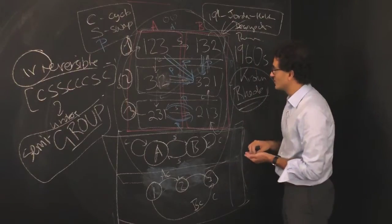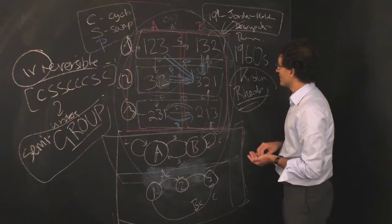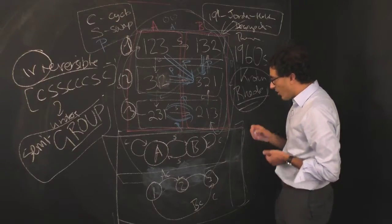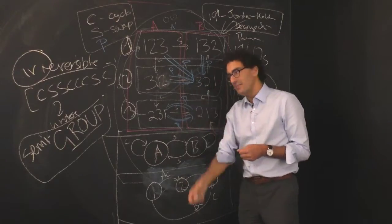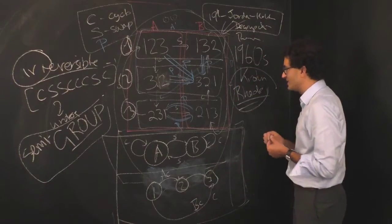of these semi-groups. And, in fact, it turns out that all you have to do is add one more atomic unit, which they called the universal reset.